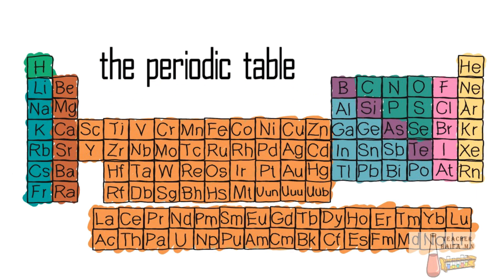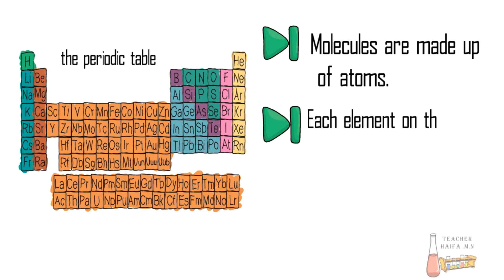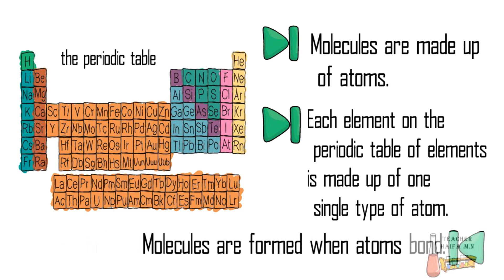Molecules are made up of atoms. Each element on the periodic table of elements is made up of one single type of atom. Molecules are formed when atoms bond.